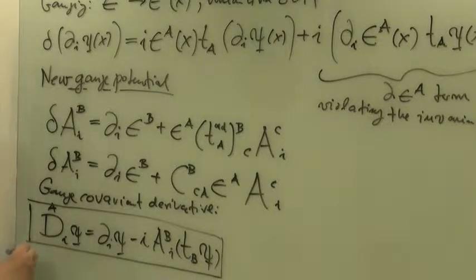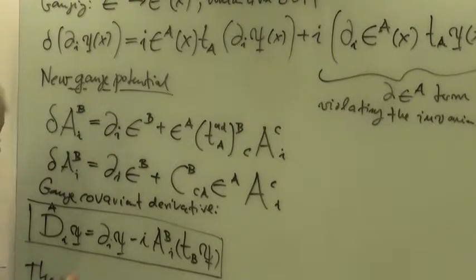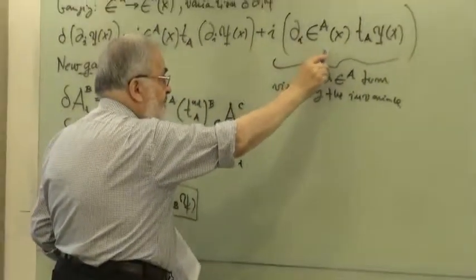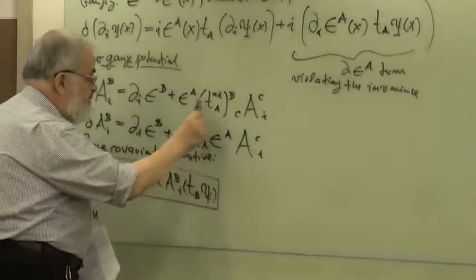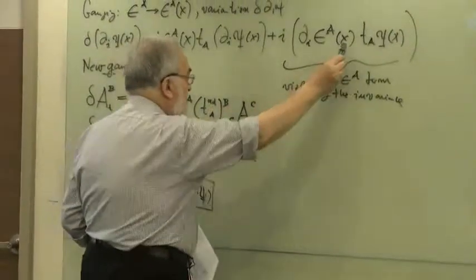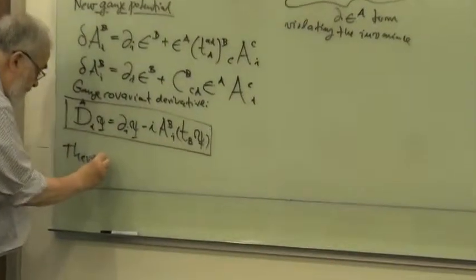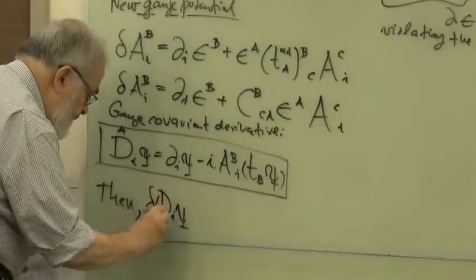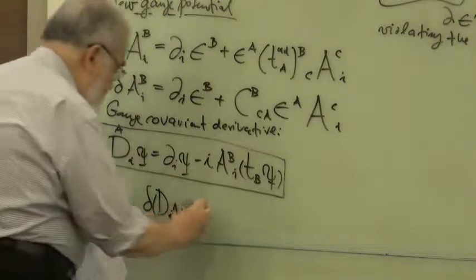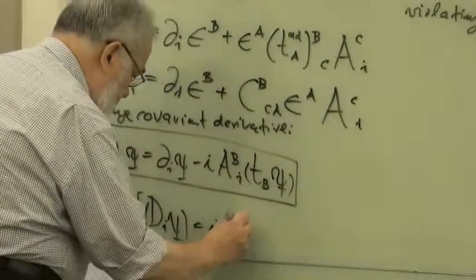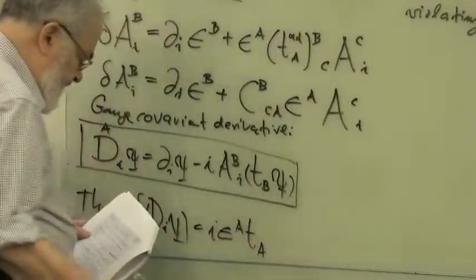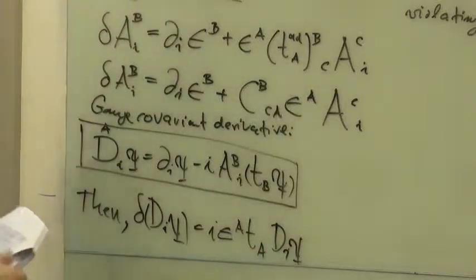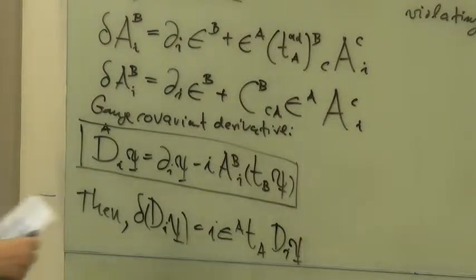And then if we have this, then the variation—we have no longer the variation of the partial derivative, which is now sort of compensated by this term which we have here. So we have then that the variation, which we can verify by exploiting this formula of the gauge covariant derivative Di of ψ, is minus εa times the generator ta times your value bi εa times i times b.